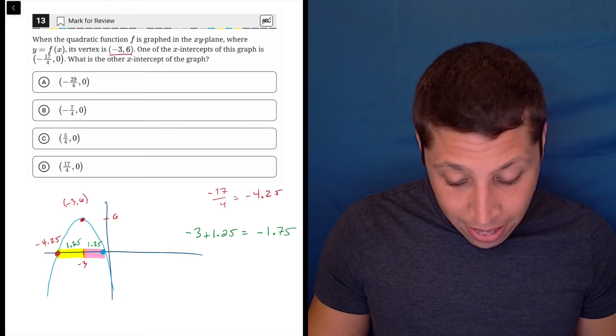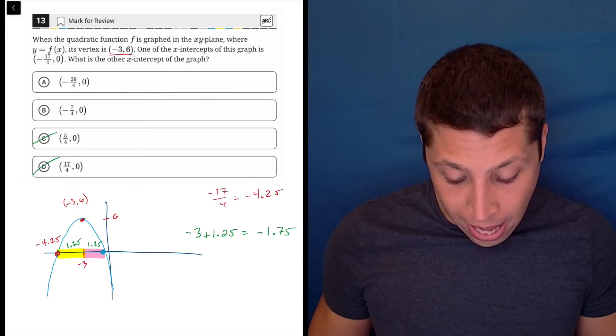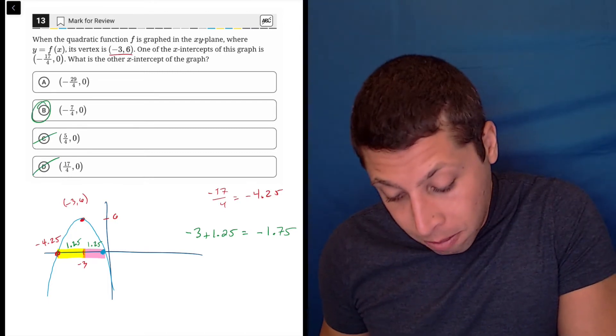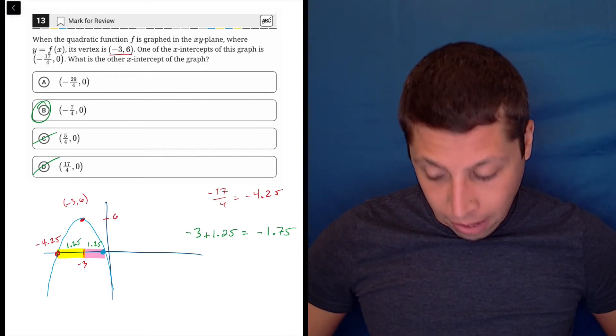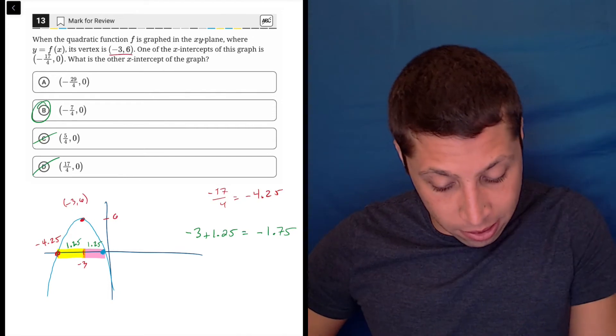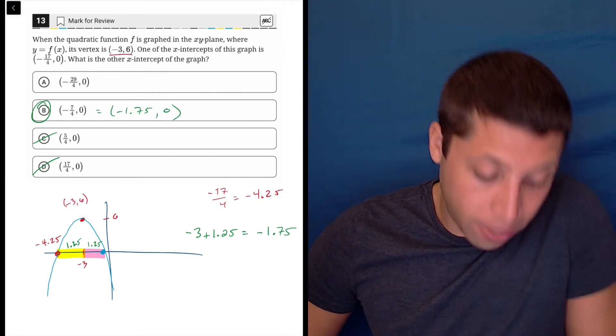So what is that as a fraction? That's obviously not a positive number. And negative 29 over 4 is the other side. So choice B is going to be the answer, negative 7 fourths. And if you do that in your calculator, negative 7 fourths is negative 1.75. And so there's our proof.